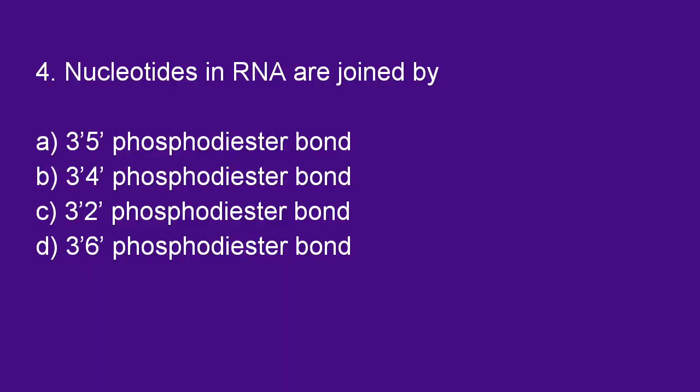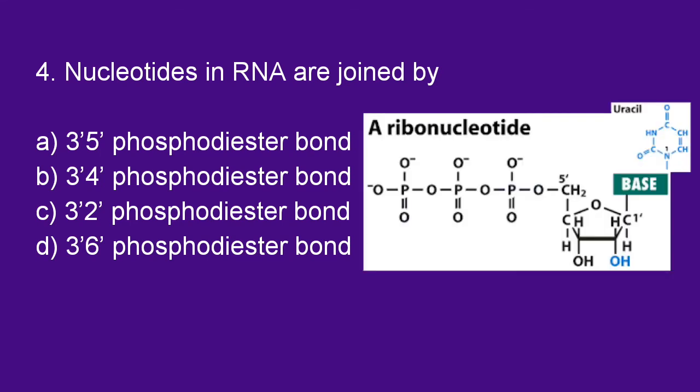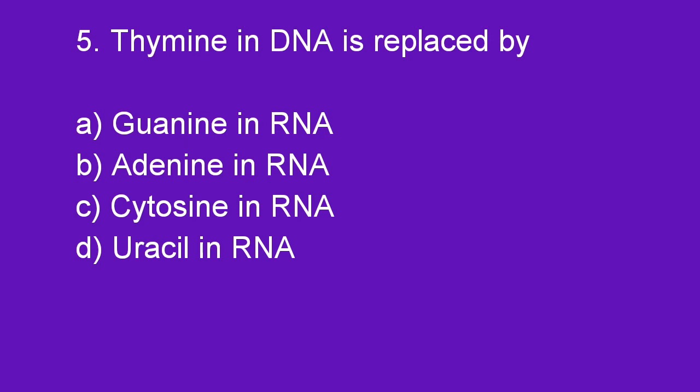Next question: Nucleotides in RNA are joined by 3',5' phosphodiester bonds. Option A is right.